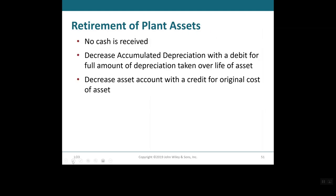Companies may simply retire the asset rather than sell it. To record the retirement, a company records it as a special case of disposal where no cash is actually received. They debit the accumulated depreciation for the full amount of depreciation taken over the asset's life, then credit the asset account for the original cost of that asset.